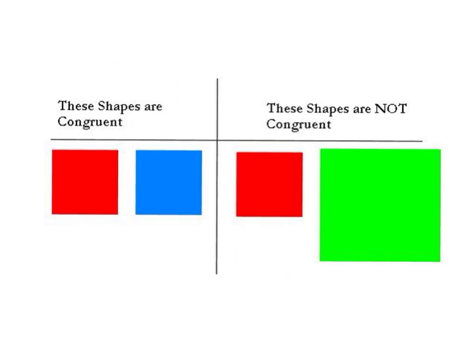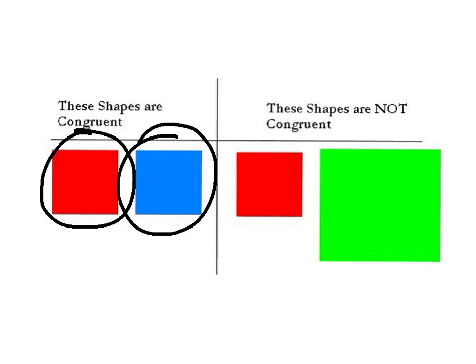Let's take a look at these examples. On the left side, these two squares are congruent — they are the same shape and they are the same size. But on the right, these squares are not congruent because they are not the same size. They may be the same shape, but not the same size. In this case, we call them similar shapes. Similar shapes can be the same shape, but not the same size.